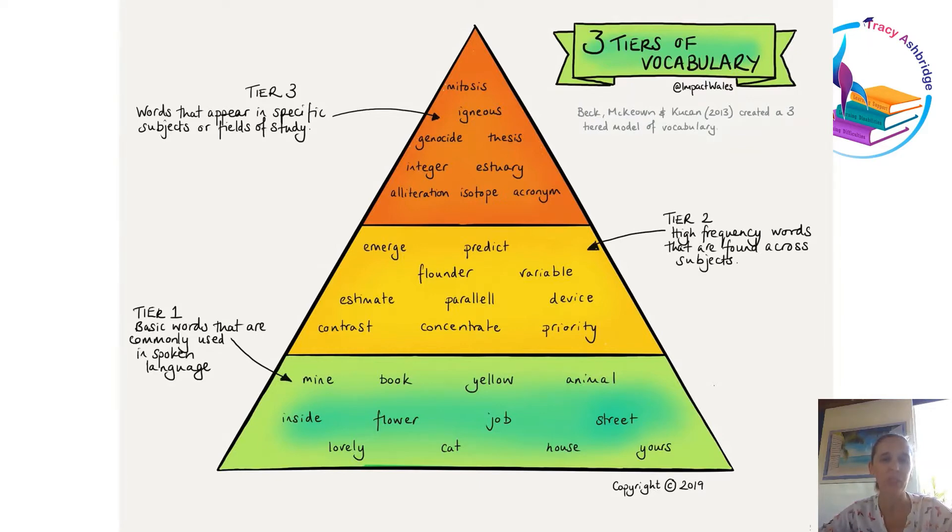The tier one words are down at the bottom. They're words that are commonly used when we're speaking. Kids pick these up on a daily basis just by talking to friends, talking to other adults, and through the books that they read at a very simple level.